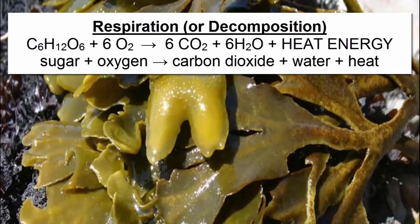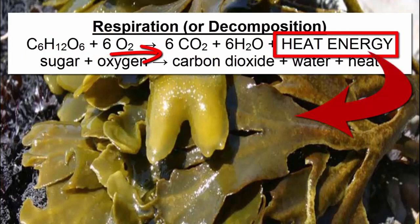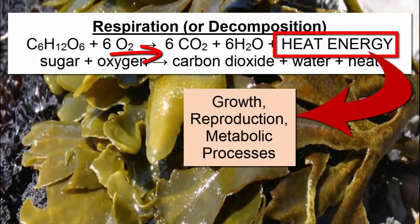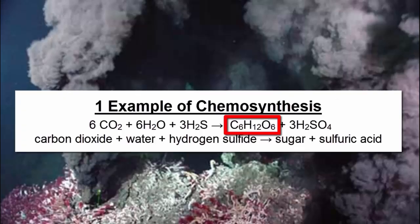Respiration is the opposite process and happens when organisms break down sugar to release its stored energy and use it for growth, reproduction, and energy-intensive metabolic processes. Whether an organism makes its own sugar or gets it by ingesting other organisms, it still must perform respiration to access the stored energy. Although photosynthesis is by far the most common form of sugar synthesis on Earth today, another process at work where light is absent is called chemosynthesis.